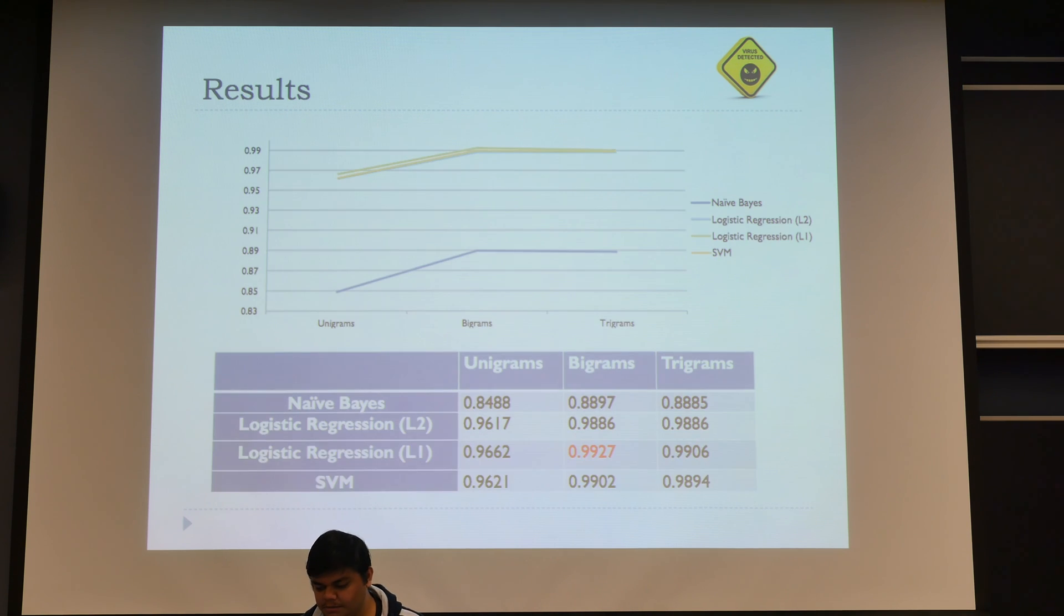These are our results. I would like to mention that we use cross-validation overall on our training set, and these are the results we get for our testing set data. As you can see, even with naive Bayes we have an accuracy of about 85%, which is quite encouraging. This shows that the technique we used—using the opcodes as features—really helped a lot.